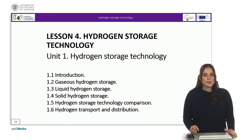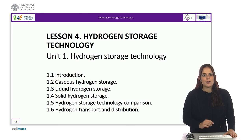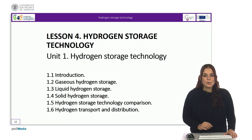In Europe, for example, domestic production of low-carbon hydrogen from natural gas equipped with carbon capture, utilization, and storage is likely to be cheaper for industry and power applications than importing low-carbon hydrogen from Russia. With this, we conclude the unit about the different options for hydrogen storage and an overview of the current hydrogen transport and distribution methods. Thank you very much for your attention.